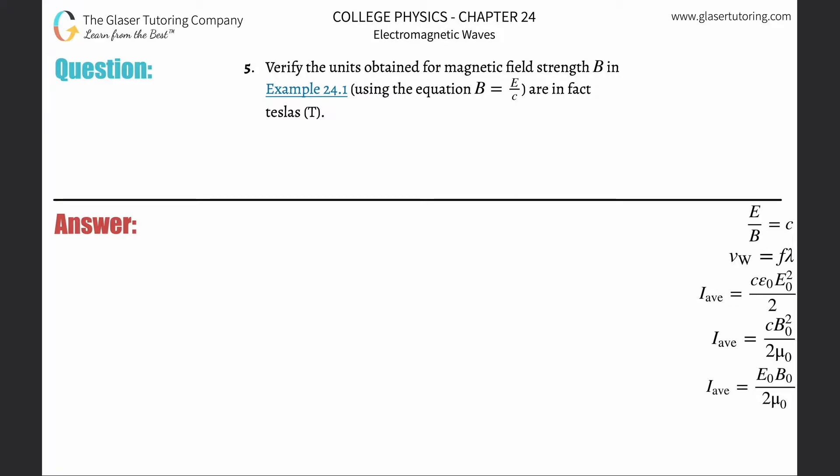Number five: verify that the units obtained for the magnetic field strength B in Example 24.1 using the equation B = E/v are in fact tesla. All right, so here we have magnetic field is going to be a function of